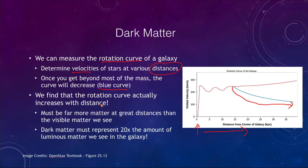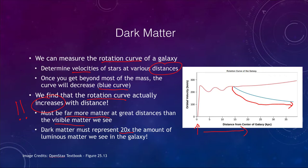However, what we find instead of decreasing is that the further out we go, the rotation curve actually increases with distance — stars are going faster and faster. Since objects are moving faster and faster, that means there must be far more matter at greater distances than any visible matter that we see. This dark matter can represent 20 times the amount of the luminous matter we see within our galaxy — there's matter out there but it is simply something that we cannot see.